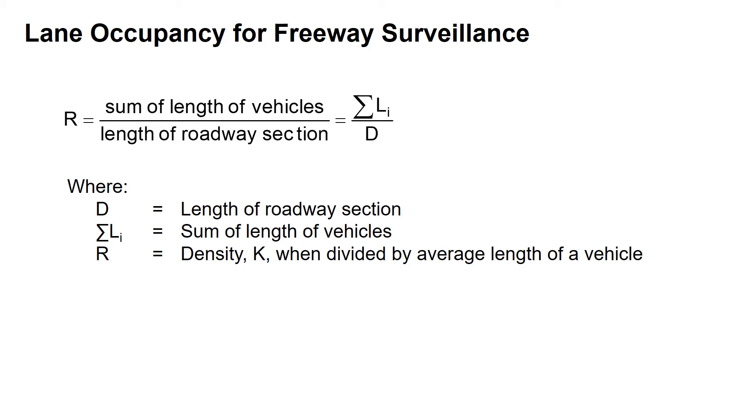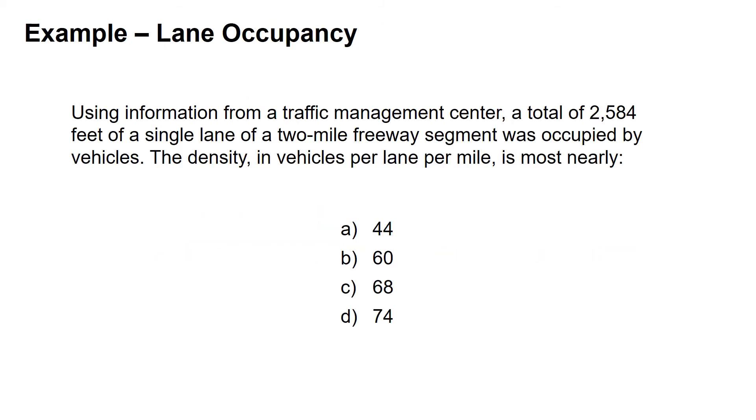Looking at an example, we have information from a traffic management center. We're told that a total of 2,584 feet of a single lane of a two-mile freeway segment was occupied by vehicles. We're asked to find the density in vehicles per lane per mile.